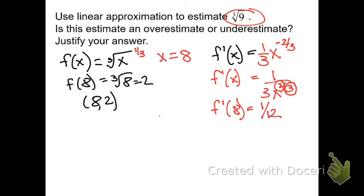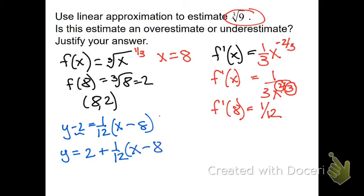Alright, write the equation of your tangent. y minus y1 equals m times x minus x1. Typically I move the 2 over to the other side, but you don't have to. I do that because that's kind of your starter point and this is your change for how far away you are from here, from 9. The cube root of 8 is 2, and our estimate is going to be a little bit above or below it, depending on this.